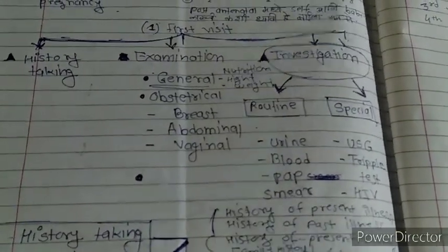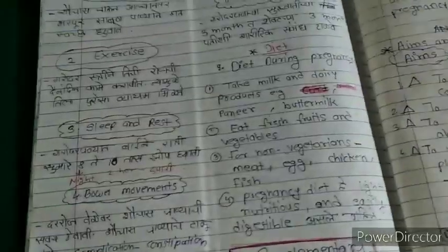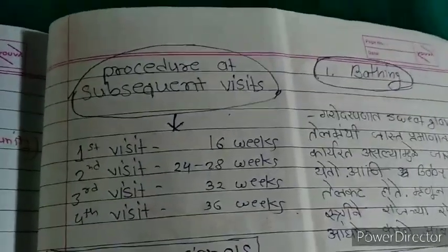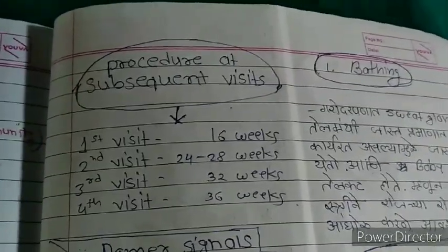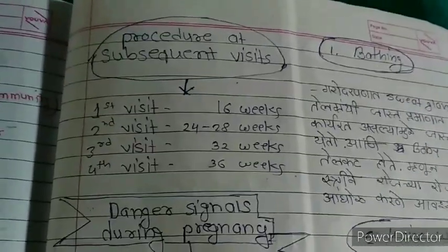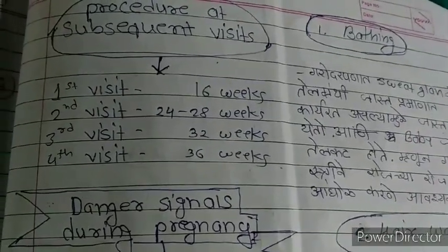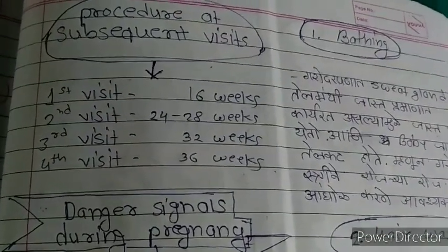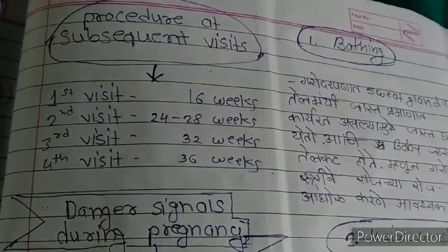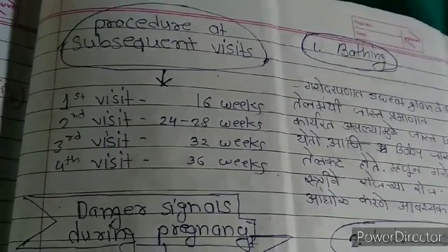The procedure at subsequent visits: there are a total of 4 visits. The first visit is at the initial presentation. The second visit is at 24–28 weeks, the third visit is at 32 weeks, and the fourth visit is at 36 weeks.